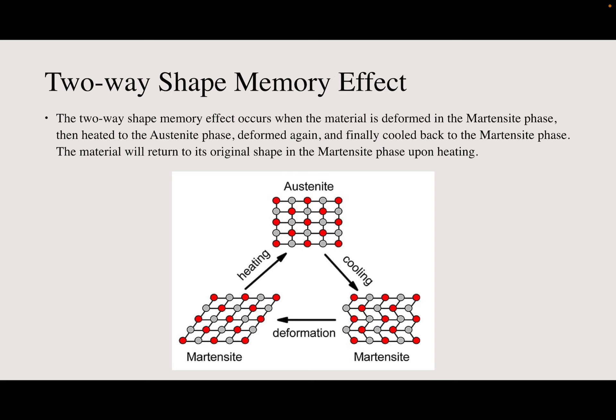So in this picture, you can see how it first starts as austenite, then you cool it down, it gets to martensite, it deforms again, and then when you heat it again, it goes back to austenite.